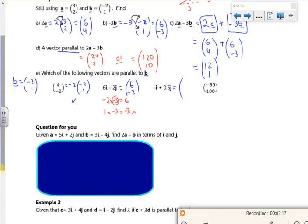So that was (-1, 1/2). So I can see that as being minus 2 times by a half. So that gives me minus 1. So that's okay. And then 1 times by a half is a half. So that's okay. So that one's definitely parallel.